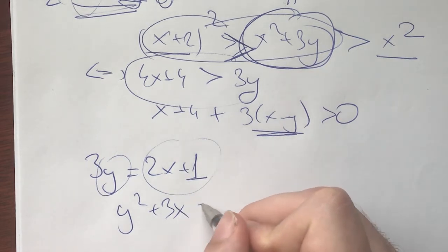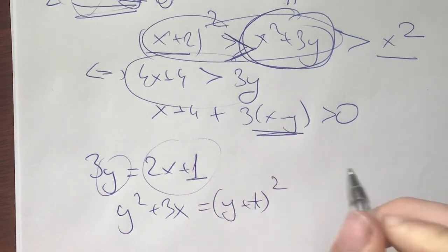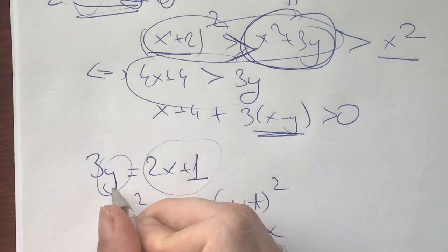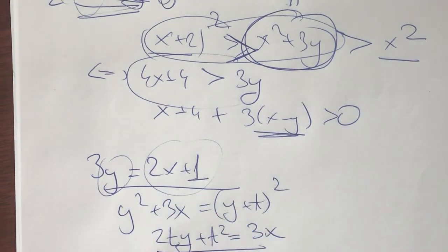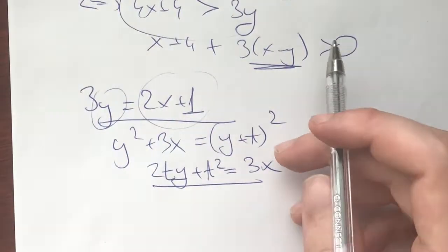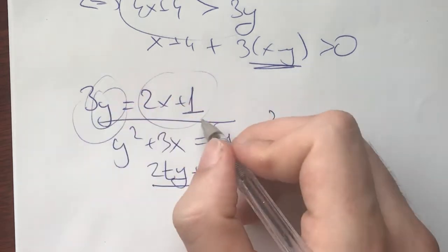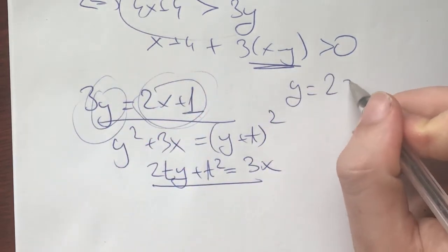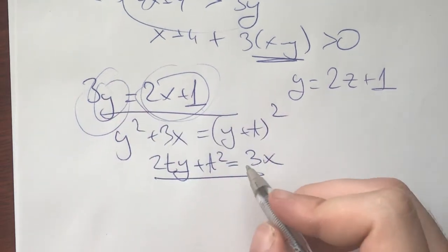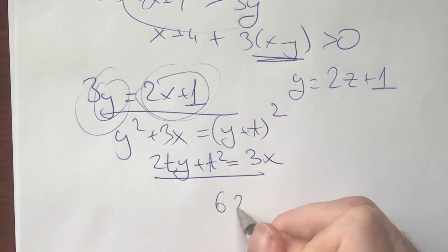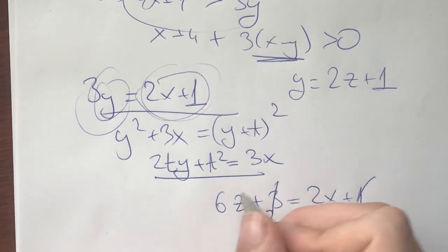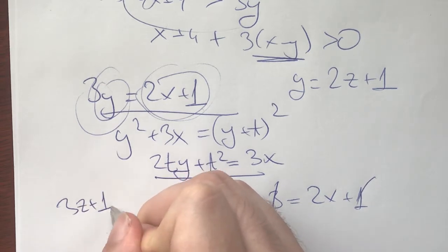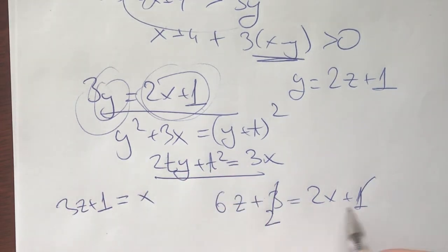And now this is also a matter of technique. We can say that, okay, we can put this as (y+t)². And then we have 2ty+t² = 3x. We have this and this, both hold for x. And now we can solve for t and y. Another way of doing the same thing will be, well, this means that y needs to be odd. So let y be equal to 2z+1. And now we will have that 6z+3 is 2x+1. Divide by 2, we have 3z+1 = x.